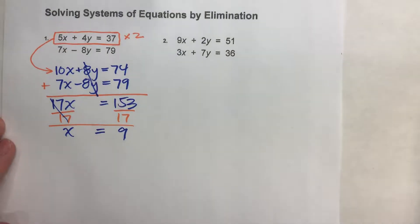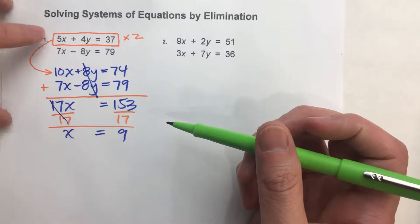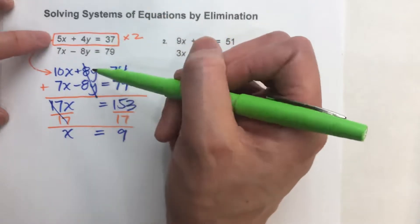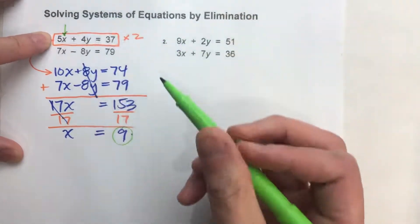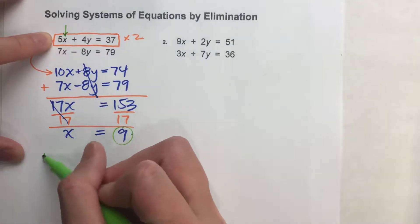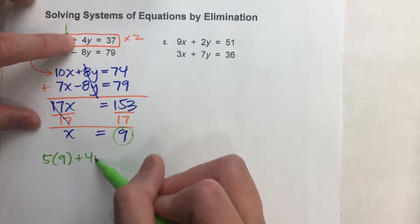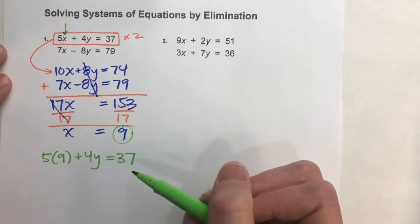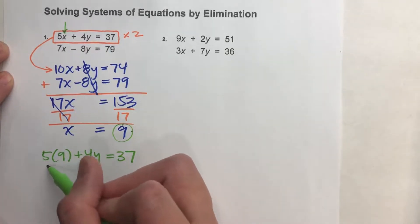Now, if I want to get y, what I'm going to have to do is put x back into one of the original equations. I'm going to choose the top one because it's a little bit easier. But you can choose either one. You'll get the same answer no matter what. But I'm going to put my 9 right back in for x. So I'm going to have 5 times 9 plus 4y equals 37. And if I solve this, I'll be able to figure out what y is. 5 times 9 is 45.